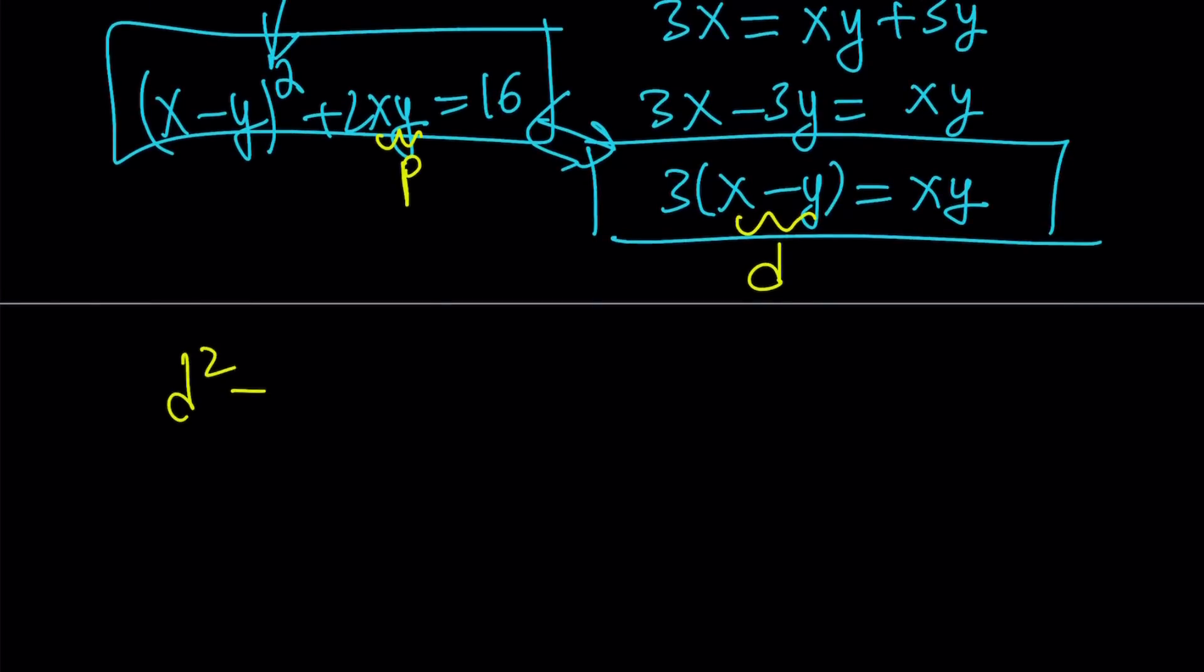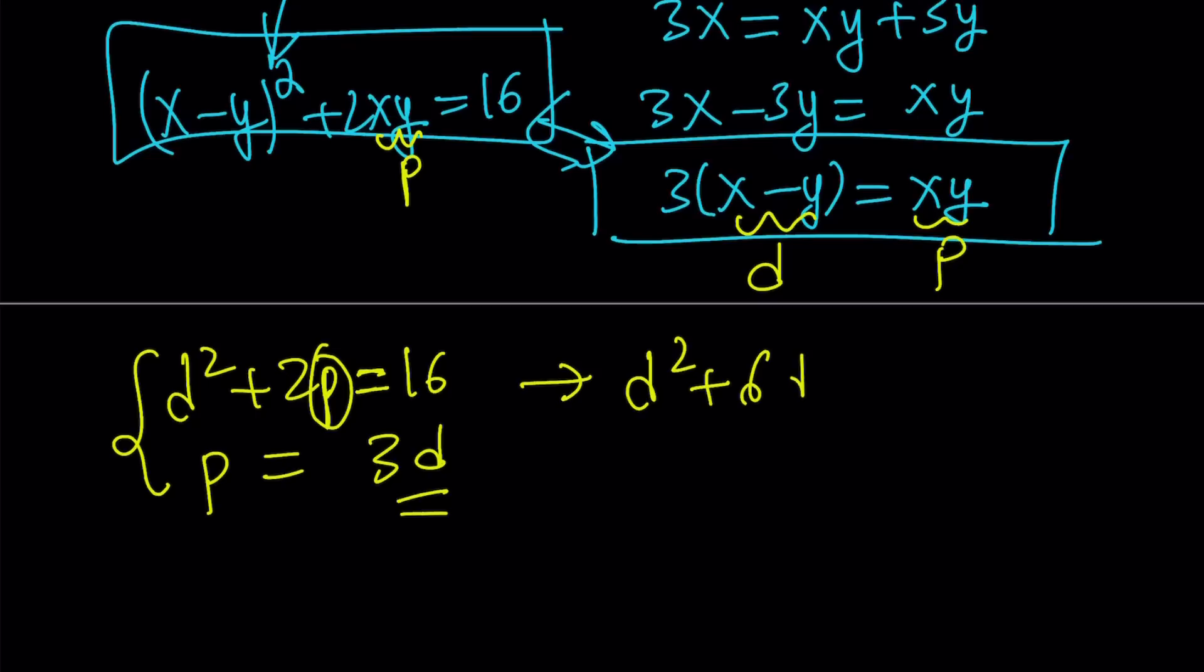d squared plus 2p equals 16. I'm not going to make the joke 2p or not 2p. And then we also get this is a p. So we can also say, hey, p equals 3d. So that's a nice system. Again, quadratic. But we can directly use substitution here. Let's go ahead and replace the p in the second equation with 3d. So d squared plus 2 times 3d, which is 6d, equals 16.